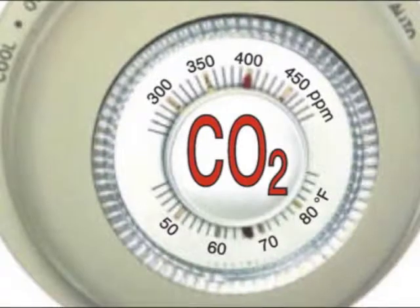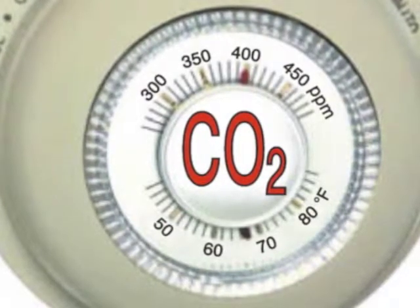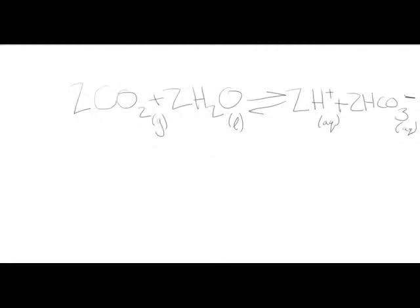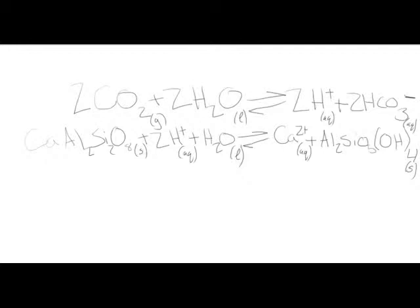Now the reaction I just described is actually a series of reactions. The first one: we have carbon dioxide plus water, which yields H+ plus HCO3 minus. As you can see, the yielding products are the products of unstable carbonic acid, which we all know cannot by itself be stable.